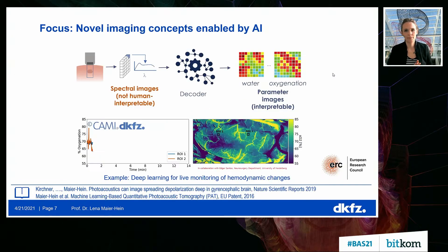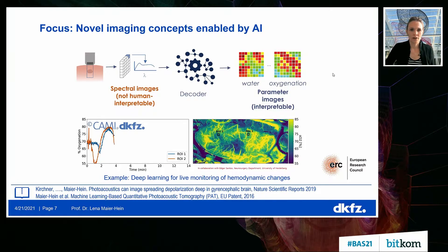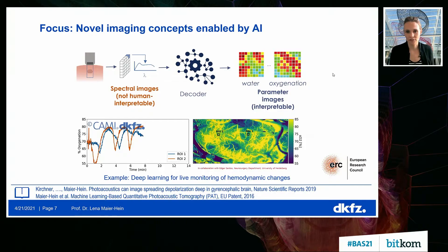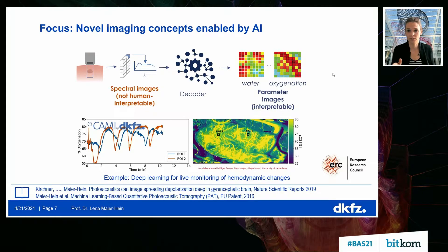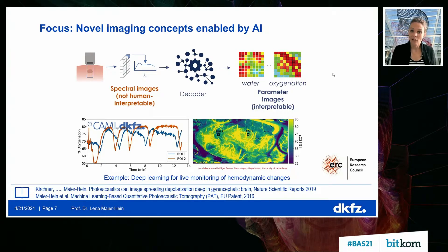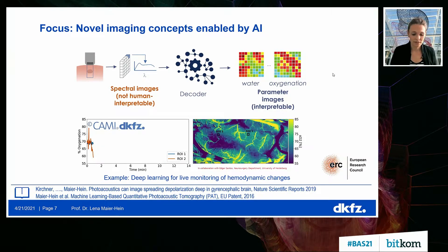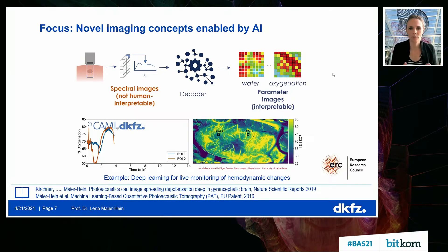To give you one example, we work on new imaging techniques such as photoacoustic imaging, where the actual data is not human interpretable. We use deep learning to convert the high-dimensional data into clinically relevant information. For example, you see here a phenomenon called spreading depolarization — a fast-forwarded movie — which occurs in patients that have a stroke. However, today I want to talk at the meta level: the validation of AI algorithms, which goes beyond surgery and beyond imaging.